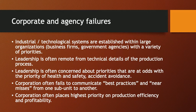Let's turn now to corporate and agency failures — both private sector corporation failures and public sector government agency failures. Large industrial and technological systems are embedded within large organizations, within business firms and corporations, and they are also located within a network of government agencies. Each of those higher-level organizations has a variety of priorities and ways of influencing behavior at the firm level.